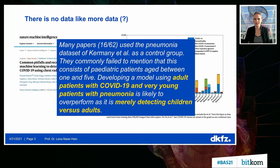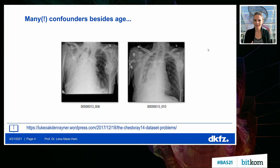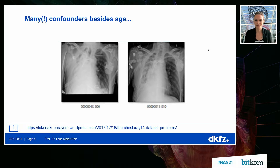Now you may say age is an obvious confounder — that's how we call these hidden variables — but there are a lot of not-so-obvious ones. For example, cables in the images, or even the position in which you take an image can have something to do with the health condition of the patient. So, domain knowledge from my perspective matters.